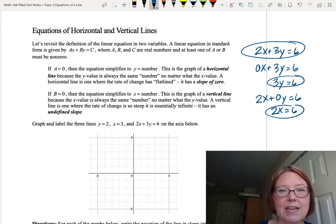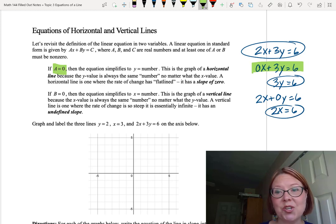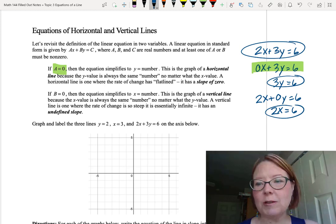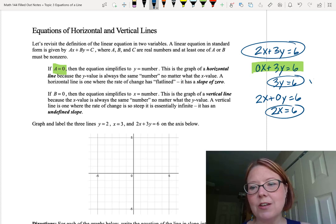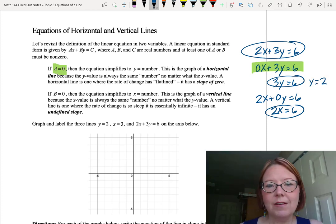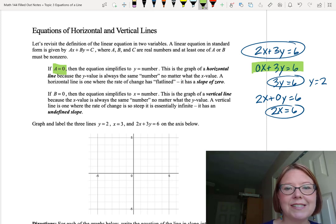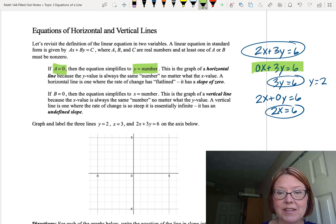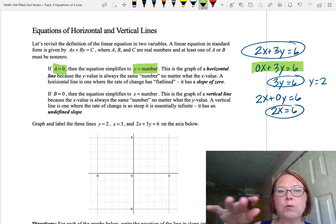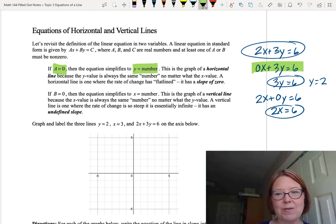Now in the case where a was 0, like that 0x plus 3y equals 6 example, then we get down to 3y equals 6, or simplifying just a little bit further, dividing both sides by 3, we would land on y equals 2. We end up basically with y equals some number. This is the graph of a horizontal line because the y value is always the same. In this case, the y value would always be 2, no matter what the x value is. That horizontal line is the one where the rate of change has flatlined. It has a slope of 0.